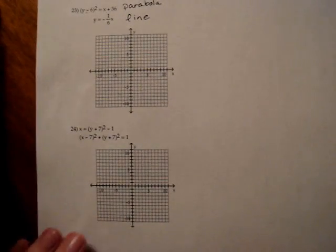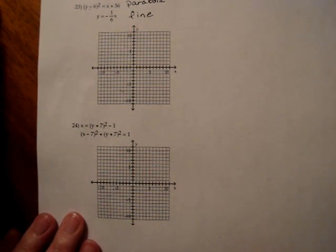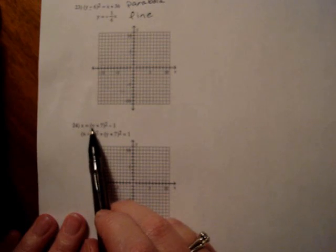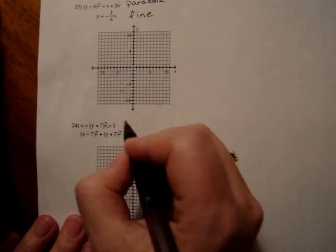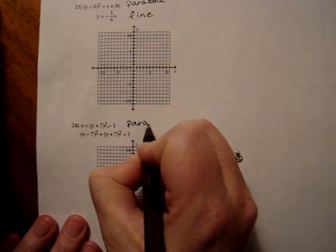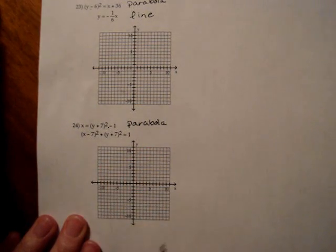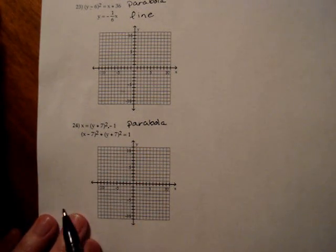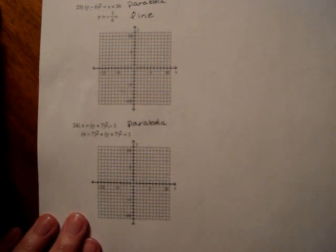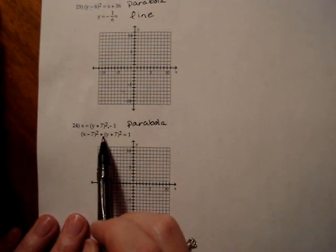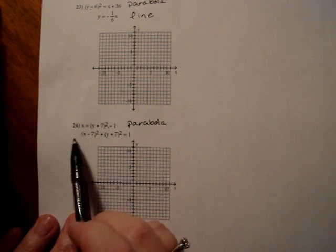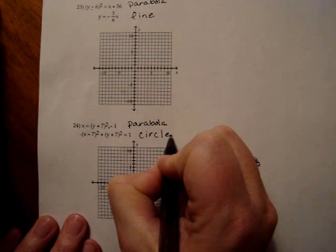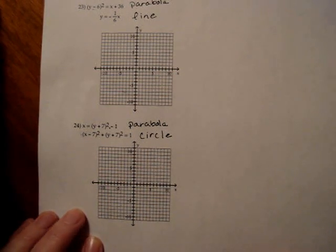When we look at number 24, the first equation, I have an x and the y portion is squared. So again, this is a parabola and it's even in the form we like it in. And the second equation has an x squared and a y squared. There's a plus between them. And the numbers in front are the same. There's nothing there. There's one in front of each. So this is a circle, turns out to be a very tiny circle, but that is a circle.